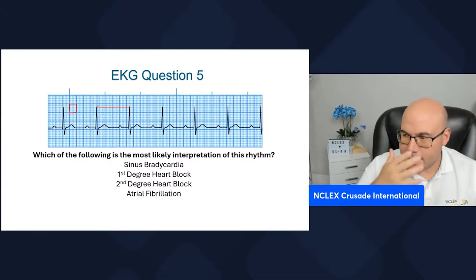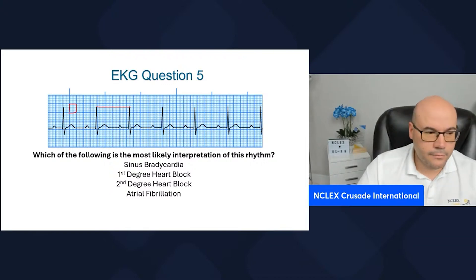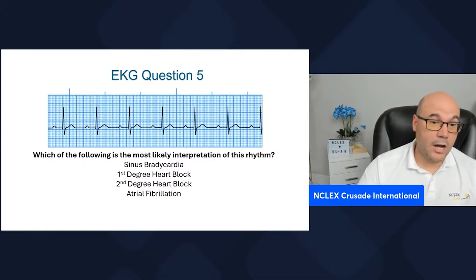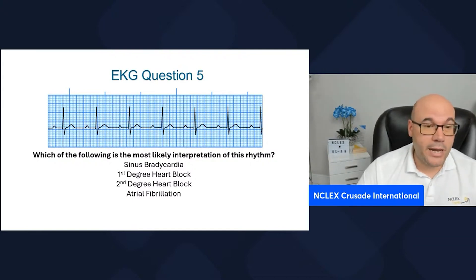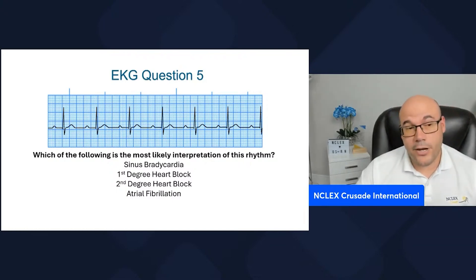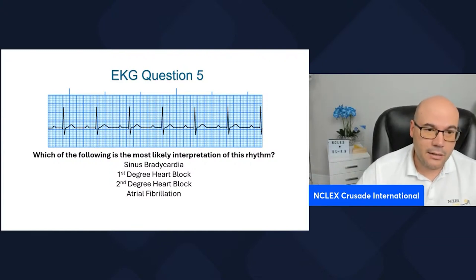So this is a regular rhythm. Now, what's the heart rate? Some of you are saying sinus bradycardia. If this is sinus bradycardia, my heart rate needs to be less than 60.